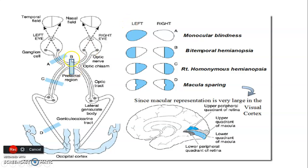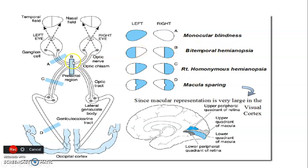If you have a lesion affecting the chiasma — such as a pituitary gland tumor — you are affecting the nasal fibers crossing there. You won't see the temporal field on one side, and you also won't see the temporal field on the other side. That is why we call it bitemporal hemianopia when there is injury at the optic chiasma.